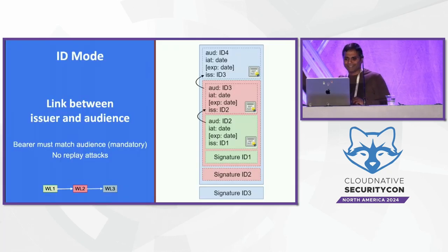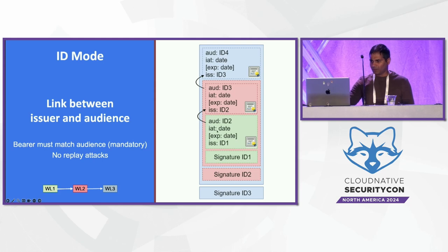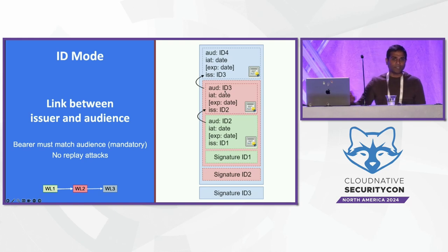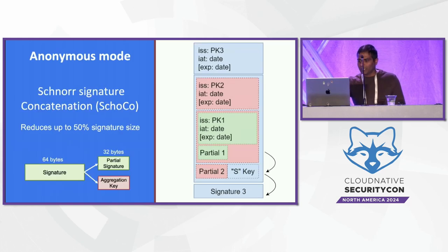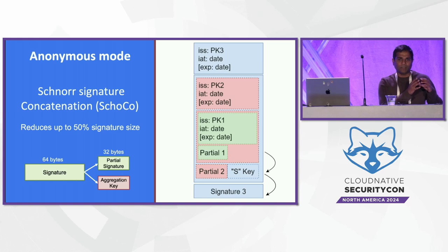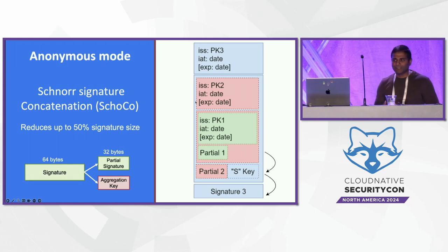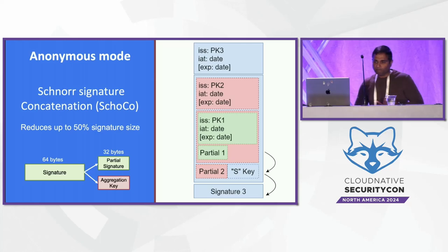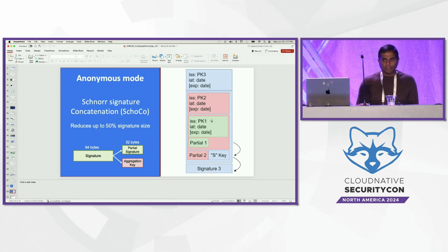You have a first claim with signature ID 1 and the audience, then another verification with signature ID 2. The most important thing is you also have to have a signed audience — these are the parties that are going to validate your claim. The anonymous mode is where we extract half of the key and build another partial signature with an aggregation key — Schnorr concatenation. Thank you all very much.